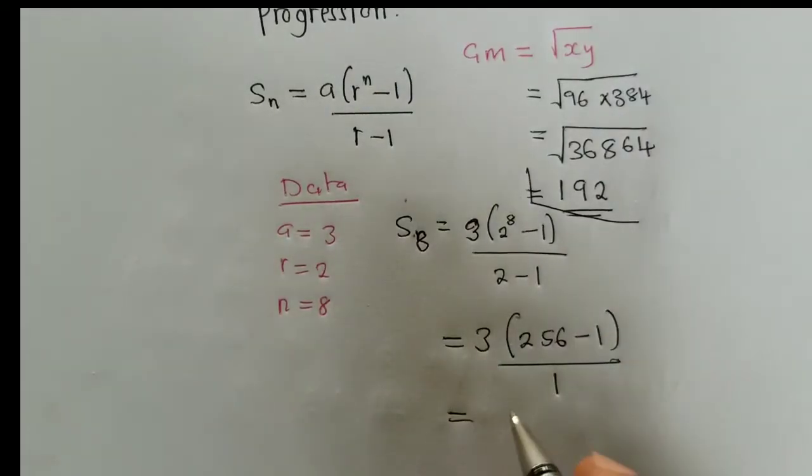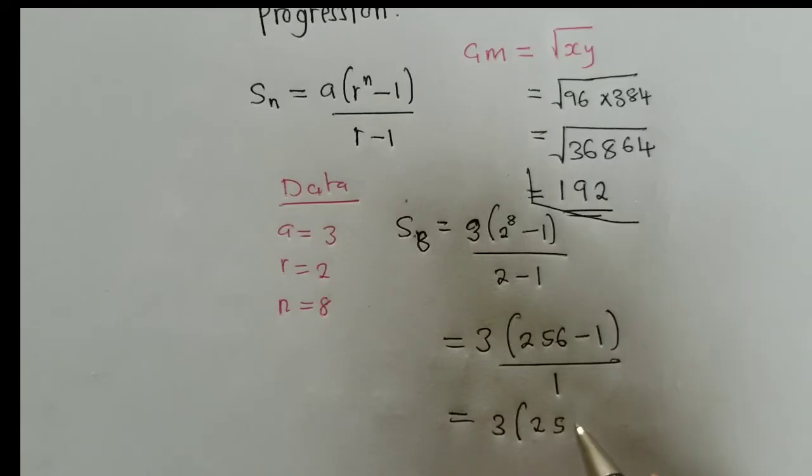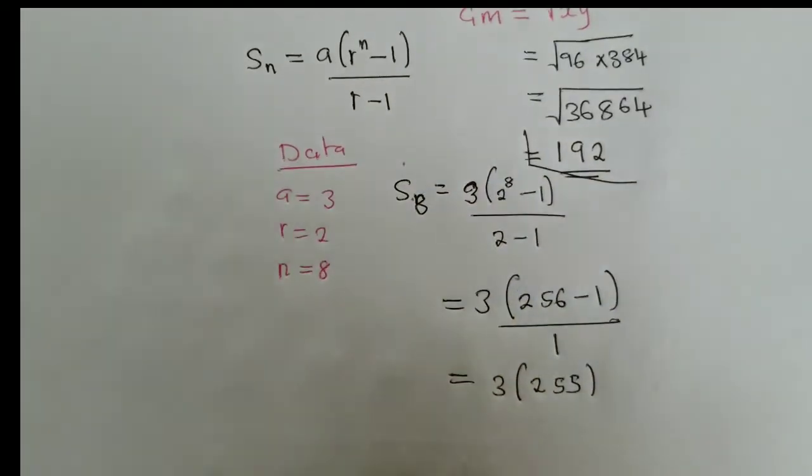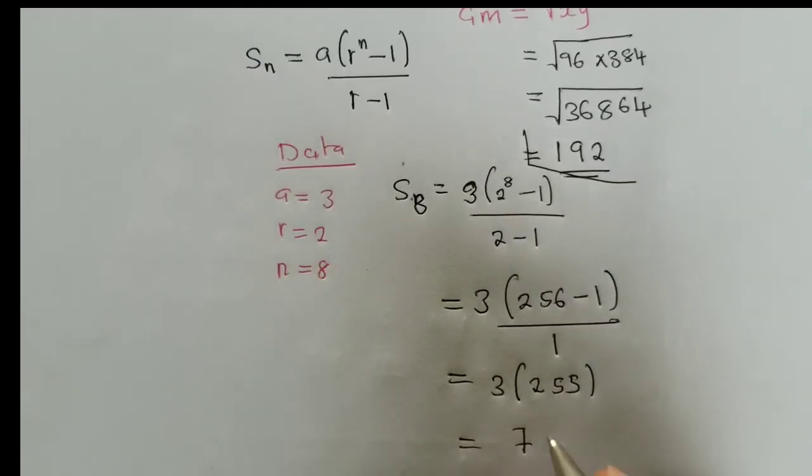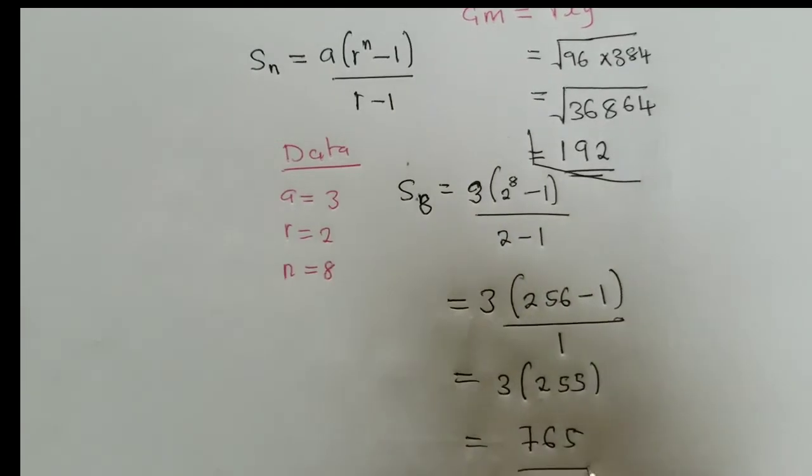So lastly, almost concluding, 3 there, 255. And when we multiply 255 by this, we're going to get 765. This is our solution.